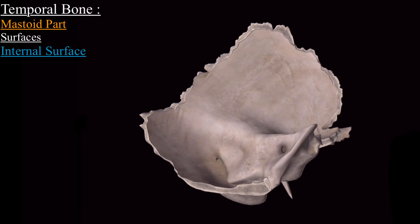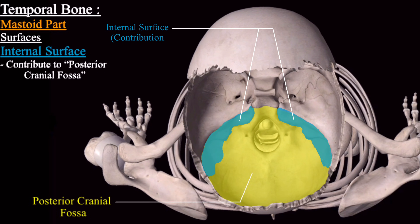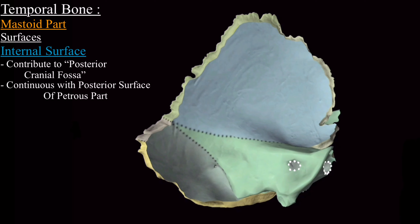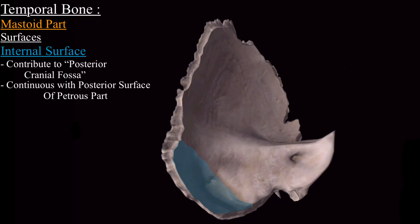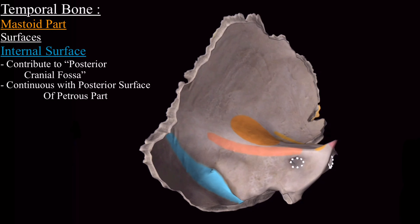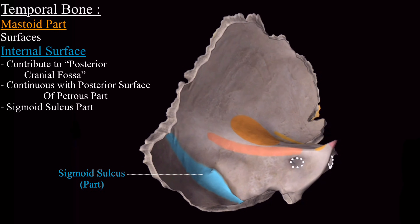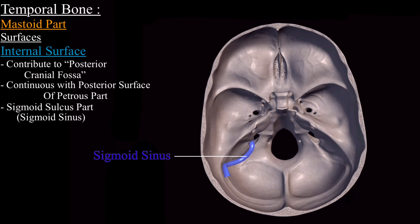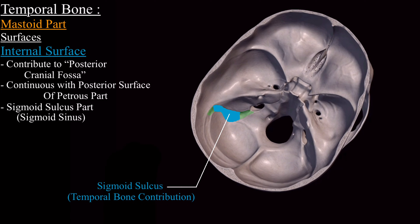The internal surface of the mastoid part contributes to the posterior cranial fossa and is continuous with the posterior surface of the petrous part of the temporal bone. On the internal surface is present part of the sigmoid sulcus, which lodges the sigmoid sinus. Close to the sigmoid sulcus is present a foramen — the mastoid foramen — which opens on the external surface.